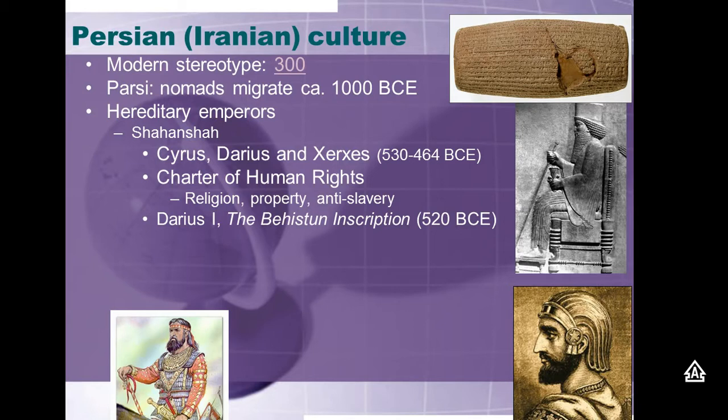Darius is not saying that he is God — very differently, he is carrying out God's will here on earth. He says: 'May Ahura Mazda be a friend unto thee, and may family be unto thee in abundance, and may thou live long.' He's wishing his conquered people goodwill. As long as they don't rebel and as long as they follow God, he's basically wishing them blessings.